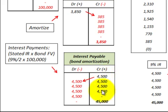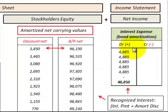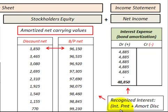The interest expense we recognize each period is based on the interest payment amount of $4,500 plus the amortized discount. That amortized discount is an extra interest expense that we recognize each period.